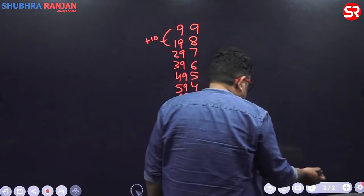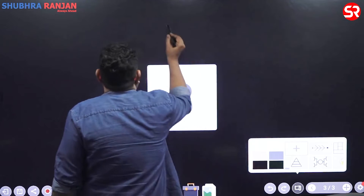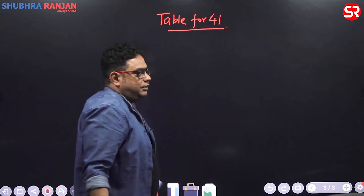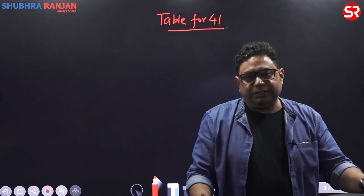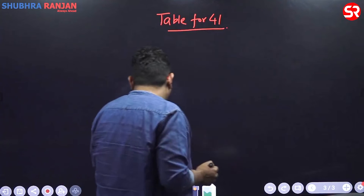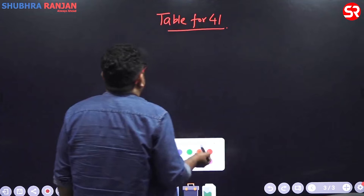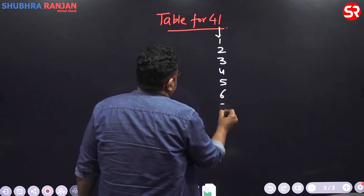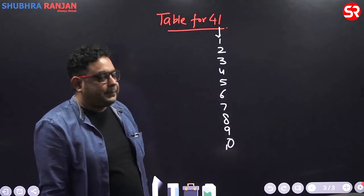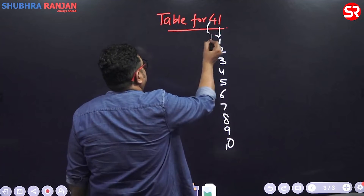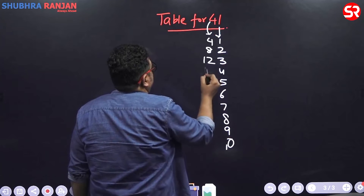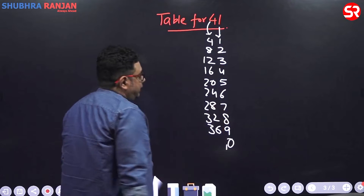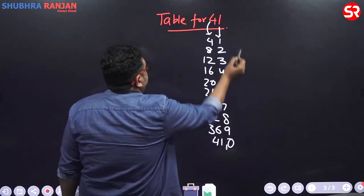Let's talk about more tables. For example, what would be the table for 41? You write table of 1 on one side: 1, 2, 3, 4, 5, 6, 7, 8, 9, 10. And on the other side, write table of 4: 4, 8, 12, 16, 20, 24, 28, 32, 36, and 40 plus 1 is 41. This is table of 41. When you are doing 41 times 3, you are doing 1 times 3 and 4 times 3 — we just do it in reverse.